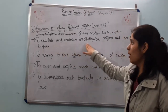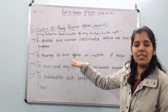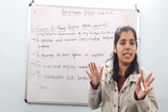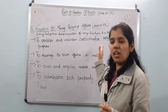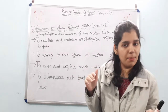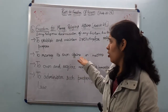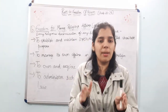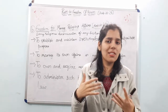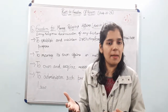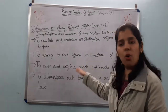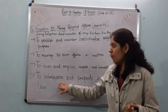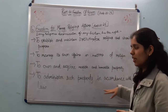The last right under Article 26 is to administer such property in accordance with law. So any religious property that a denomination holds must be managed according to law. To summarize Article 26: establish and maintain institutions for religious/charitable purposes, manage religious affairs, own/acquire movable or immovable property, and administer property in accordance with law.